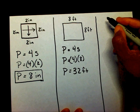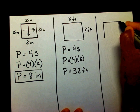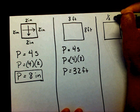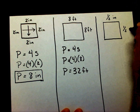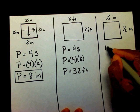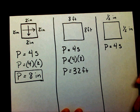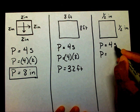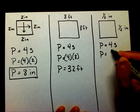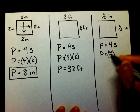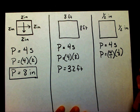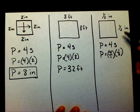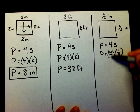Here's the last example. Let's say this side is one-half inches and this side is one-half inches. So p equals four times s. Since my side is a fraction, I'm going to turn the four into a fraction as well. I noticed my side was one-half, so I went ahead and made my four into a fraction four over one.